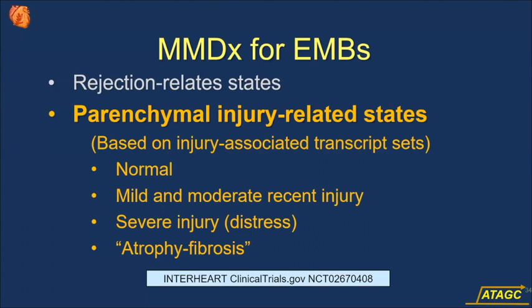I'm trying to look at the injuriness in every biopsy — heart, lung, or kidney — and independently look at the rejection, since rejection is an injury separating out. Each biopsy should get two independent phenotypes. I'm looking at normal recoverable injury, severe injury causing distress and probability of loss, and atrophy fibrosis. We can see the characteristics of atrophy fibrosis as we know it in the kidney, though we can't prove it in every biopsy.